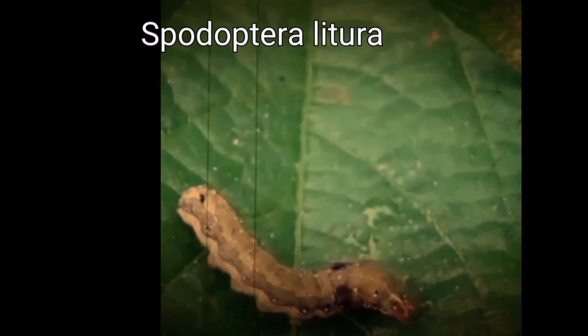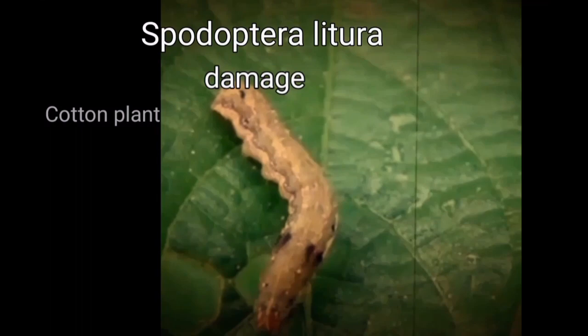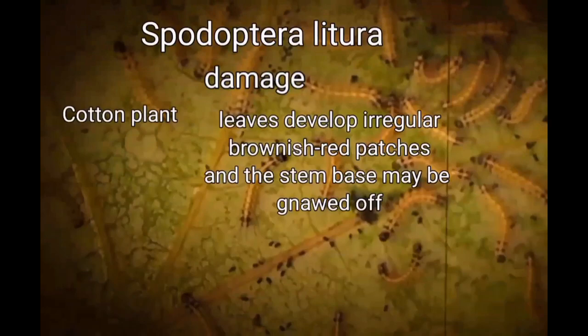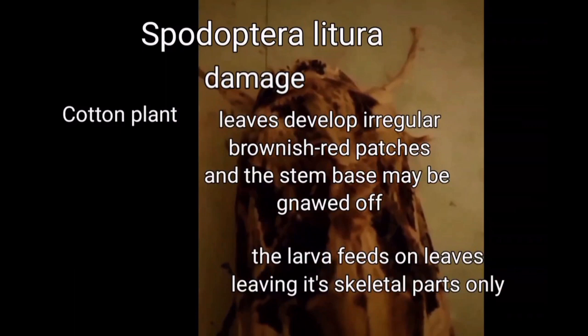Now let us discuss the damage caused by Spodoptera litura. In cotton, leaves develop irregular brownish-red patches and the stem base may be cut off. On tobacco plants, the larvae feed on leaves, leaving only the skeletal parts.